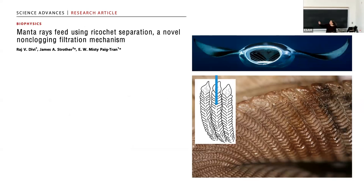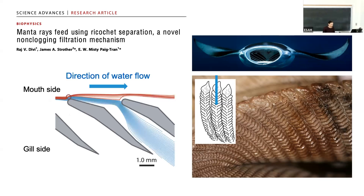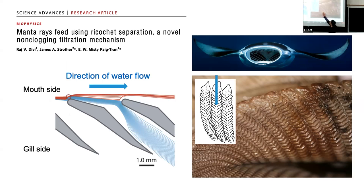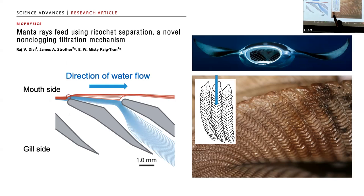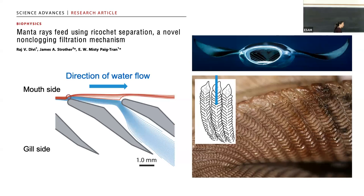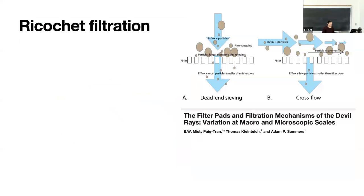We're going to think about why those filters might all look the same. Misty's group proposed that what this filter is doing is something called ricochet separation. The idea is that if you look at these guys from the side - each one of these is one of those little plates, the fluid is flowing from the mouth - the red trajectories are particle trajectories, which bounce off the top of these things, and then the clear water flows out this way.